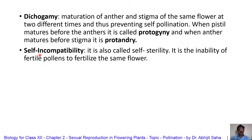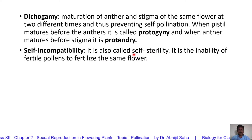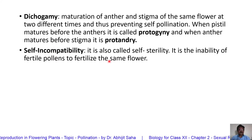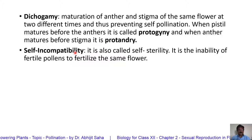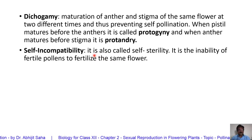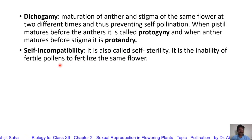Next is self-incompatibility, also called self-sterility. Incompatibility means the inability — it is the inability of fertile pollens to fertilize the same flower. Certain genetic reasons or barriers exist due to which the flower is not pollinated by its own gametes. Under such circumstances, the flower opts for cross-pollination.